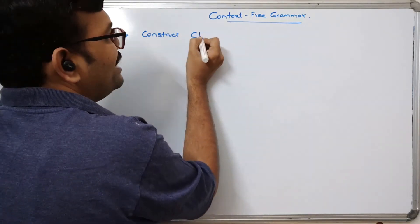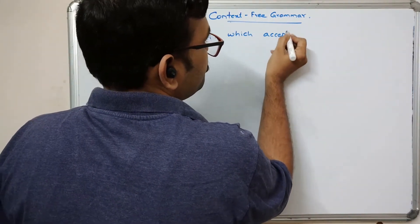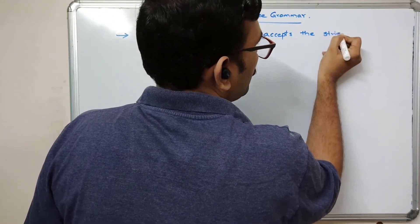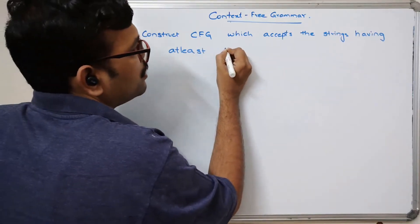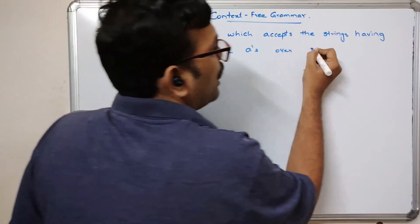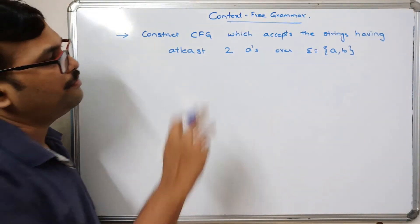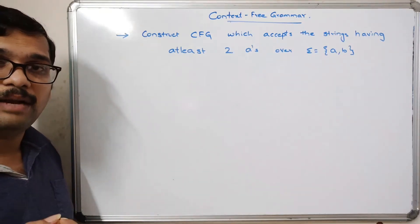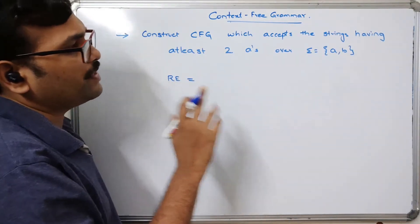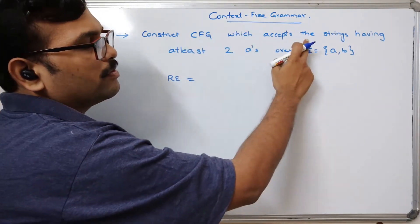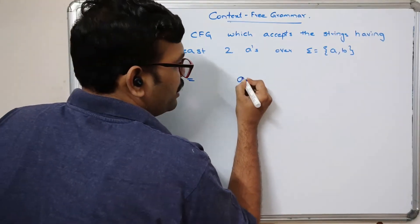Let's construct a CFG — context free grammar — which accepts strings having at least 2 a's over the alphabet {a, b}. We need to write the context free grammar for this condition, meaning the grammar accepts all strings having at least 2 a's — not necessarily consecutive, they can appear anywhere. First, we can write the regular expression for this.